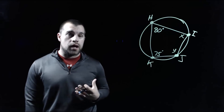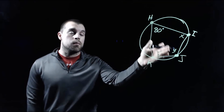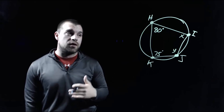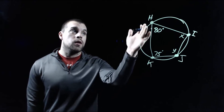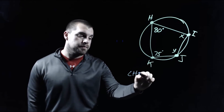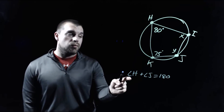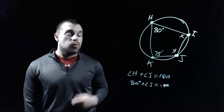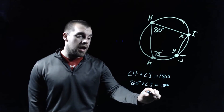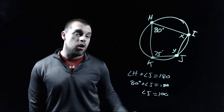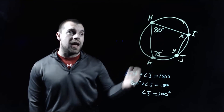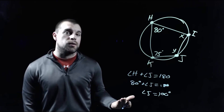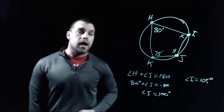Now in this picture, we've got a quadrilateral inscribed within a circle, and we're given two angle measures of the quadrilateral but we're missing the other two. So we're going to use the property that says opposite angles have to be supplementary to figure out what our X and Y values are. One pair of opposite angles are angles H and J, so those two have to add up to 180 degrees. We know angle H is 80 degrees, so angle J — our Y value — has to be 100 degrees. Similarly, we know angle K is 75 degrees, so 180 minus 75 means angle I has to be 105 degrees.